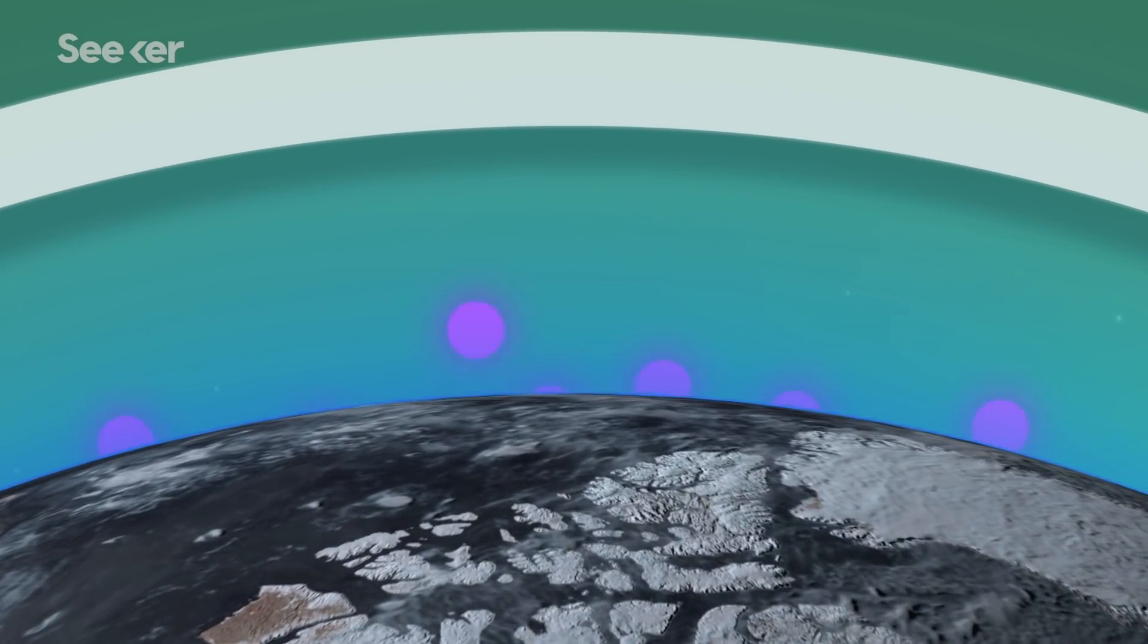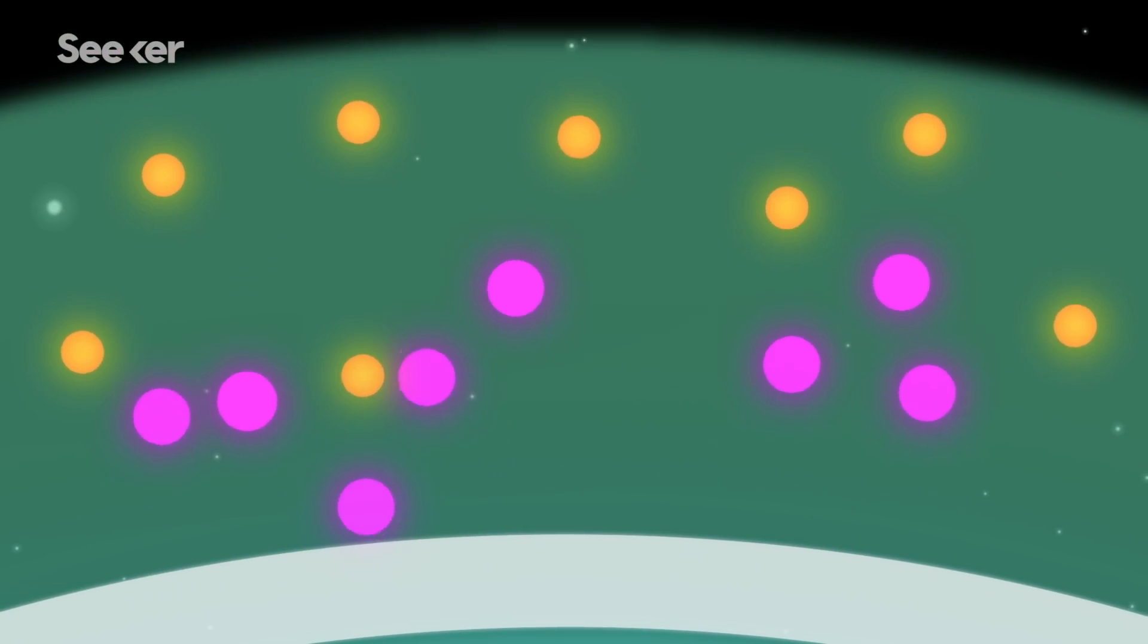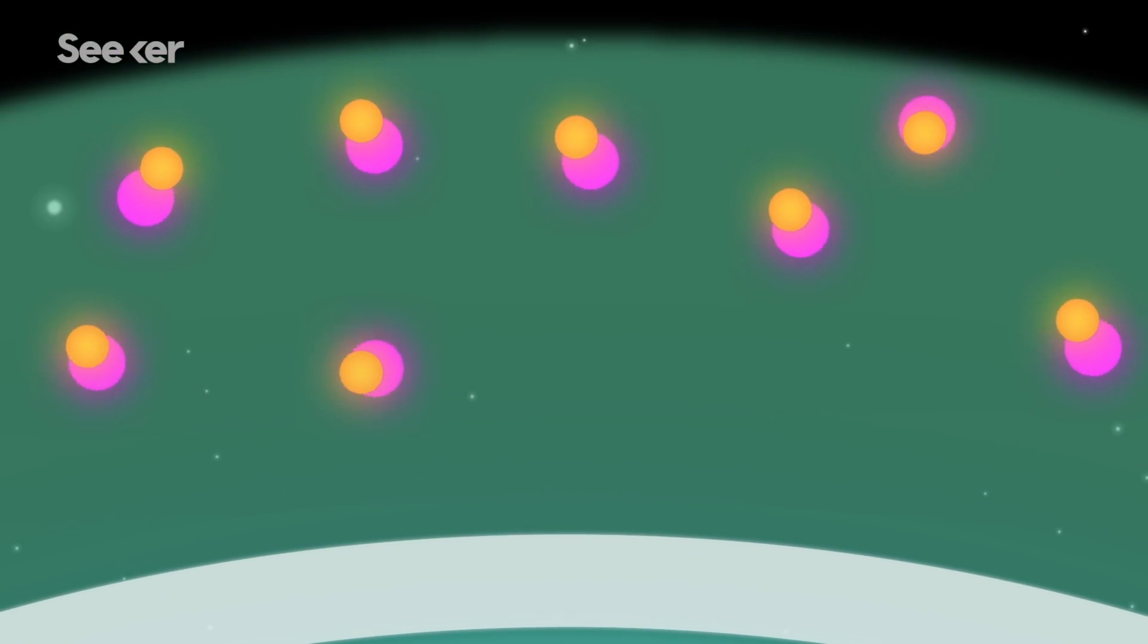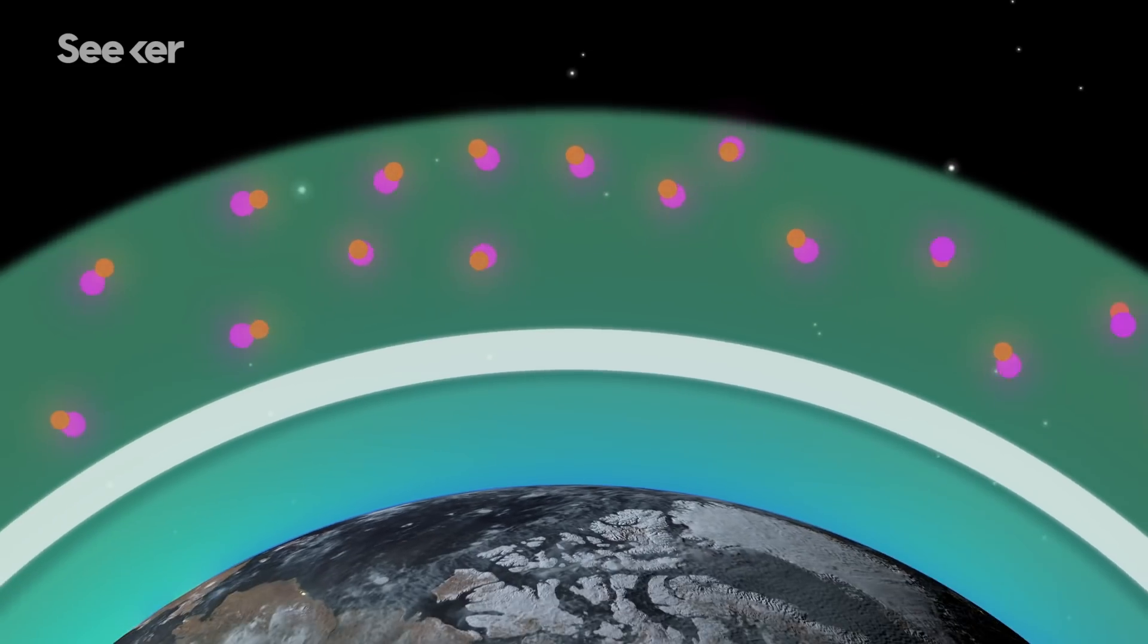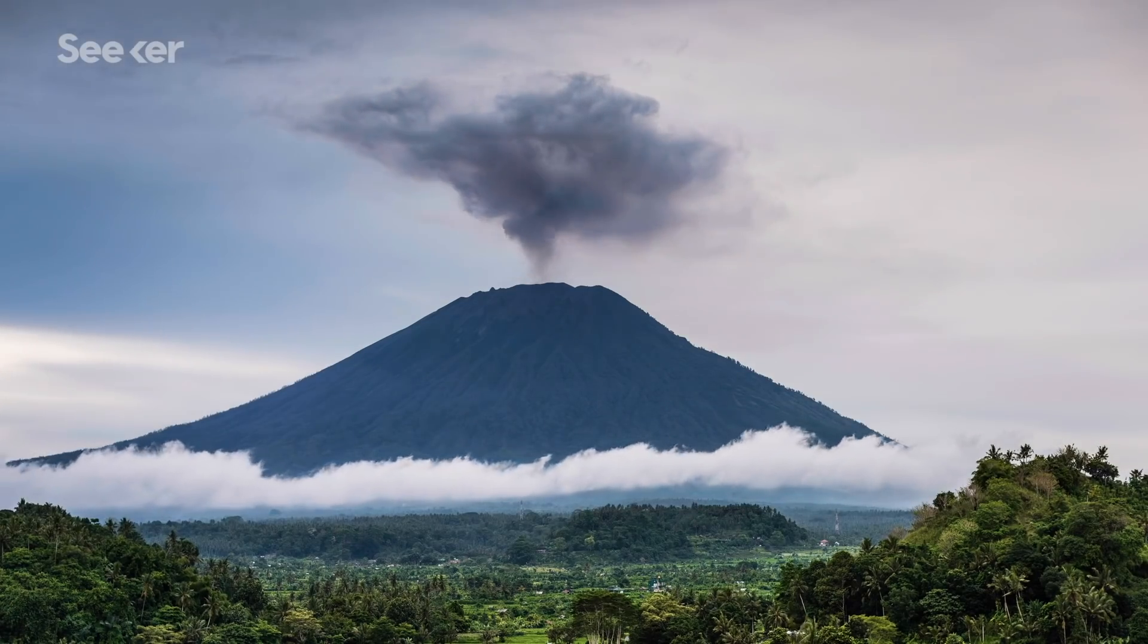You have emissions of sulfur containing compounds in the troposphere, they make their way up all the way into the stratosphere, they find each other and start making little particles. That's the natural aerosol that exists in the stratosphere. A major source of these sulfur compounds are volcanic eruptions.